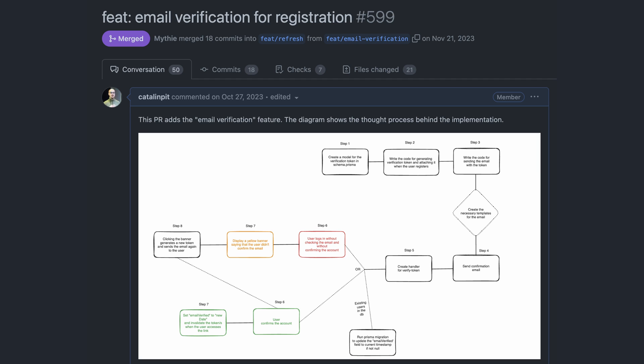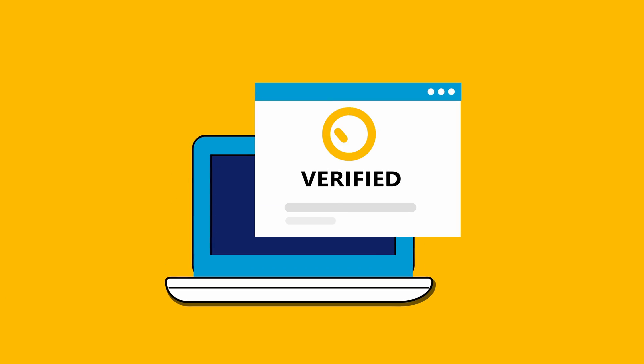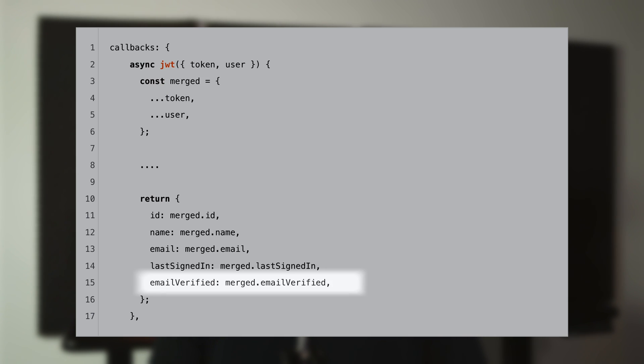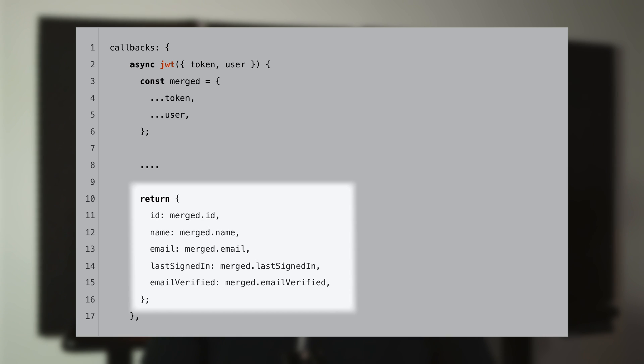Recently I worked on the email verification feature at Documenso and I had to expose an extra field, emailVerified, to the client. The emailVerified field represents whether the users have verified their emails or not. The logic of adding emailVerified in the session object is as follows: merge the token and user objects, add the emailVerified field to the merged object, and return the new object.